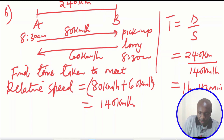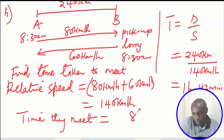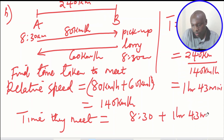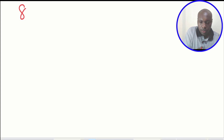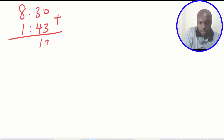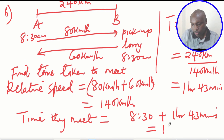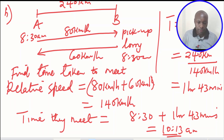Therefore to get the actual time they met, we take 8:30 a.m. and add one hour and 43 minutes. Adding: 30 plus 43 gives 73 minutes, which is 1 hour and 13 minutes, so 8 plus 1 plus 1 gives 10, and 13 minutes remaining. The answer is 10:13 a.m. That is how you solve this question on linear motion.